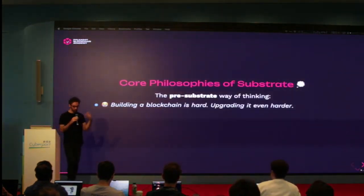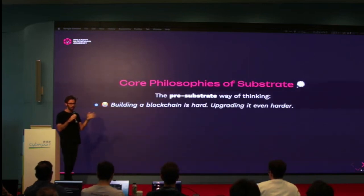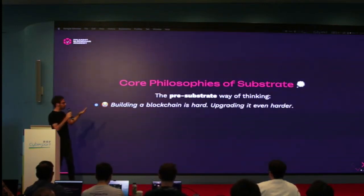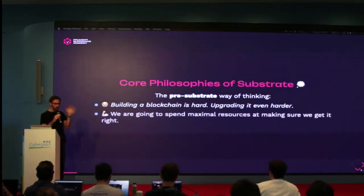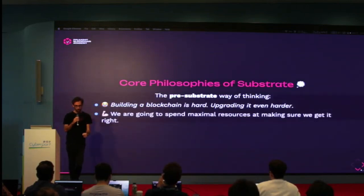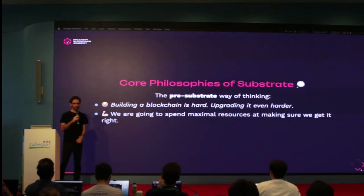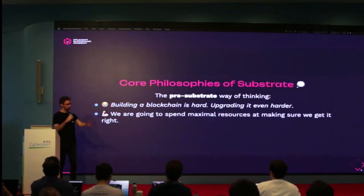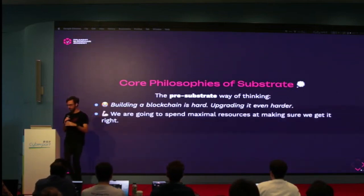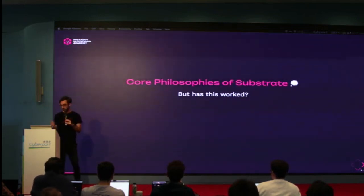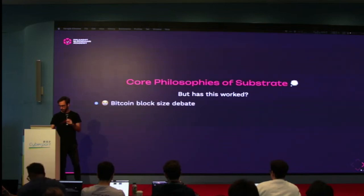Some further philosophical things about Substrate and how it approaches this situation. This is the non-Substrate way of thinking: the premise is that building blockchains is hard and very hard to upgrade. The non-Substrate way of thinking is that it's a difficult task, so we're going to put all our efforts into getting it right the first time. We're going to bring in the best engineers, think 5, 10, 20 years in advance, and make sure we get all the right parameters and software designs. So we build one blockchain and it's going to be perfect forever. Does this work? No. We've seen it hasn't worked so far.